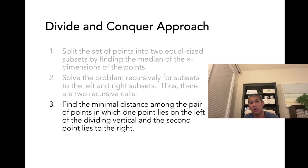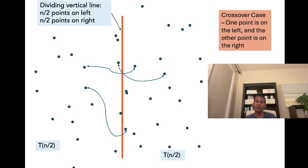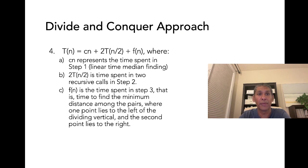We divide with a vertical line — half the points on the left, half on the right — and make the two recursive calls, each taking T(n/2) time. We still have to handle the crossover scenario: if one point is on the left and the other is on the right, how much time does that take? So after dividing, we make the left recursive call, the right recursive call, handle the crossover case, and return the best solution found.